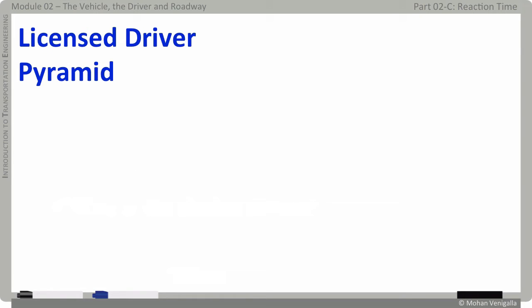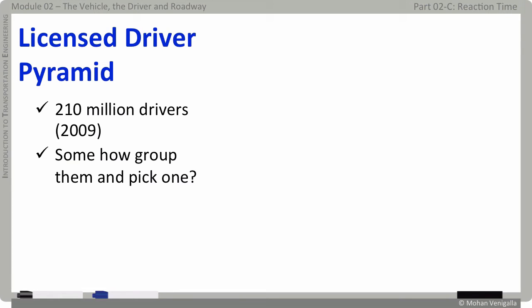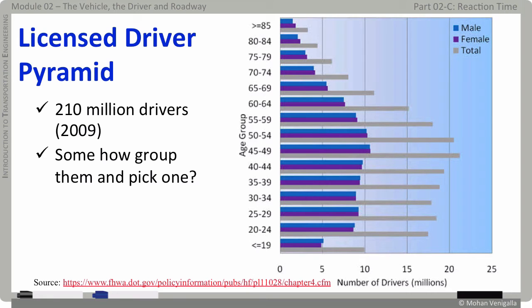In fact, in 2009, there are approximately 210 million licensed drivers in USA. And they are growing at a compounded annual rate of 1.6%. We can't design for each one of them, can we? What shall we do? Shall we group them and pick one of the groups? Even if you group them by age group and gender, as shown in this chart, and pick one of the groups, which age group shall be our favorite? Even if you pick a favorite, we still have tens of millions of drivers and presumably that many reaction times.